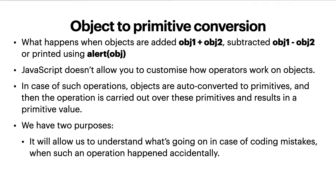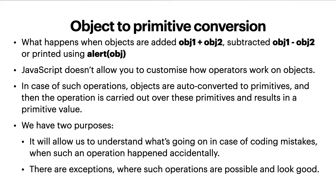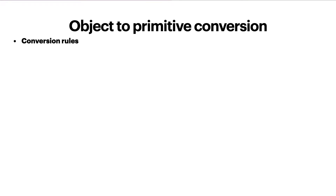Understanding object-to-primitive conversion will help us understand what's going on in case of coding mistakes — for example, if you accidentally convert an object to a string, or console log or alert an object and treat it as a primitive. There are exceptions where such operations are possible and look good, for example subtracting or comparing dates. We talked about type conversion previously, covering rules for numeric, string, and boolean conversion of primitives. Now as we know about methods and symbols, it becomes possible to fill that gap for objects.